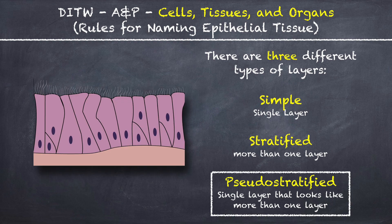And there is a special type called pseudostratified, which is a single layer of cells that looks like more than one layer of cells.